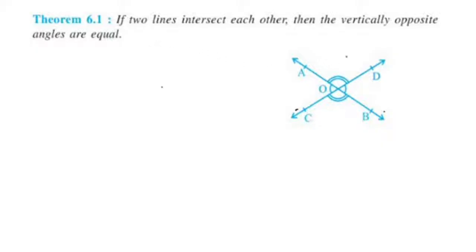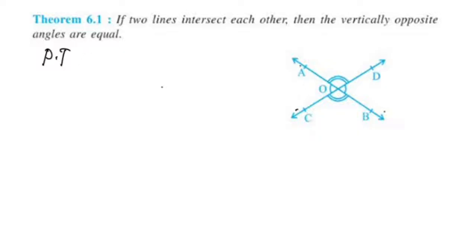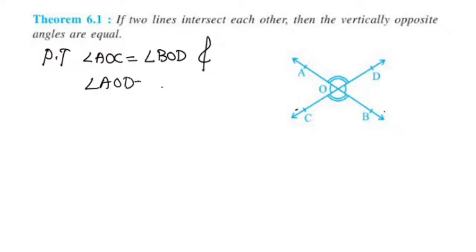Now we have a figure where two lines intersect each other. We have two pairs of vertically opposite angles: angle AOC and angle BOD. The angle AOC is equal to BOD, and the angle AOD is equal to BOC.